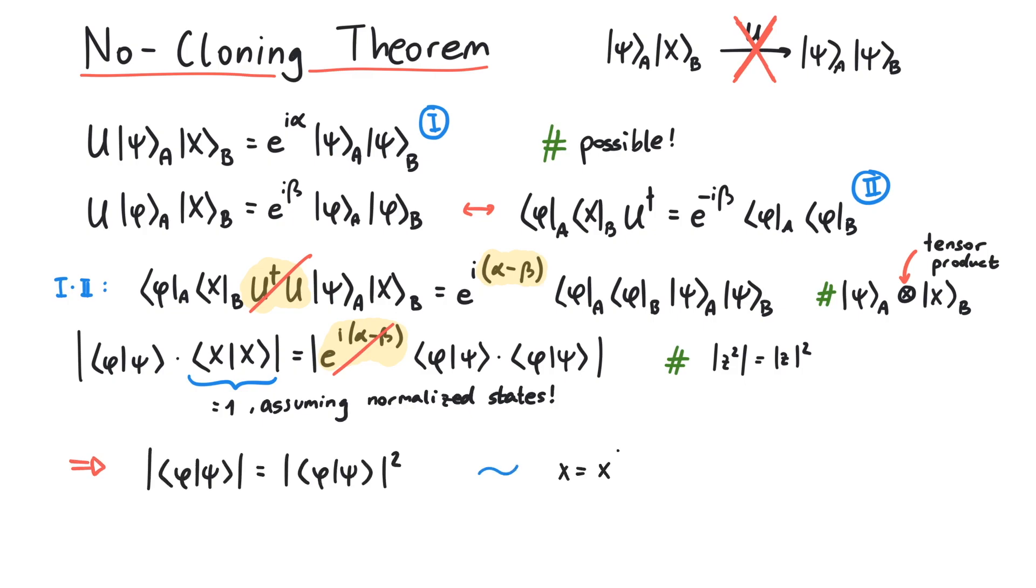This means there are only two solutions, either x equals 1 or x equals 0. But x equals 1 would mean that psi and phi are the same function, maybe with a different phase, and x equals 0 would mean that they are orthogonal.